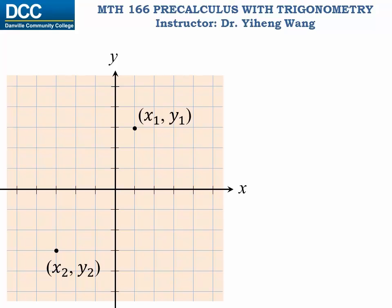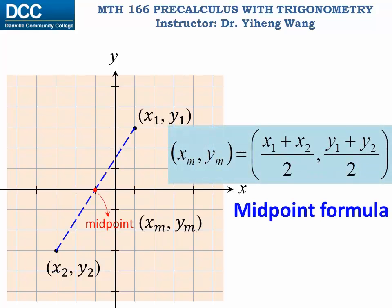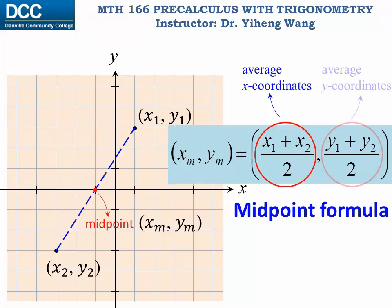and we wish to find the coordinates of the midpoint of these two points, we can use the midpoint formula. It is quite easy to remember. The x coordinate of the midpoint is the average value of the two x coordinates of the two given points. And the y coordinate of the midpoint is the average value of the two y coordinates of the two given points.